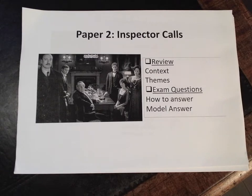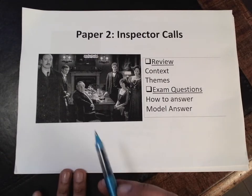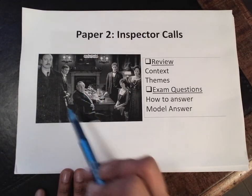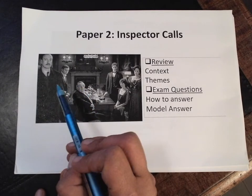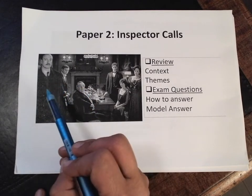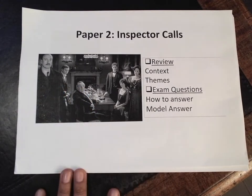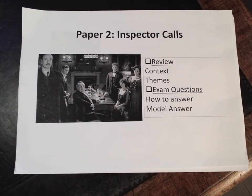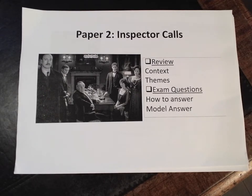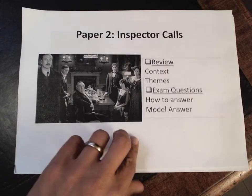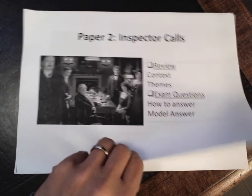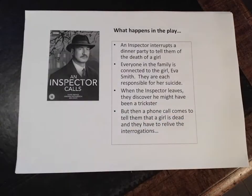The easiest way to think about the play is through the main characters. The more advanced character is the Inspector, and we'll look at that a little bit later in the video. Even more advanced — and it has appeared in past exams — would be a question on Eva Smith. So let's begin with context.